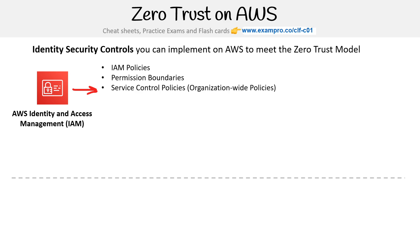Then you have service control policies. These are organization-wide policies. So if you have a policy where you don't want anyone to run anything in the Canada region, you can apply that policy at the organizational level and it will be enforced.